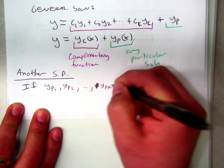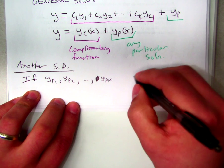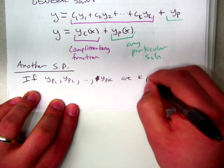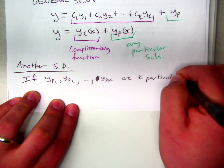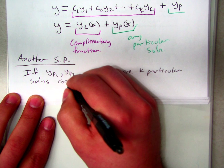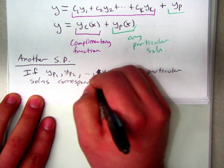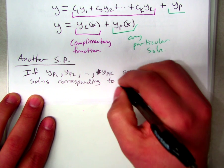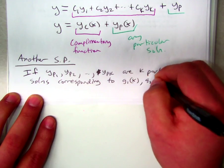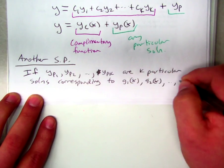are K particular solutions corresponding to G1 of X, G2 of X, G sub K of X.